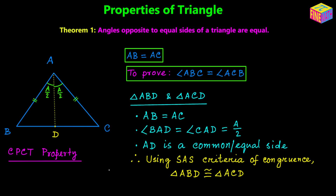Looking at these two congruent triangles, one pair of corresponding parts is the two corresponding angles. For triangle ABD, the angle at B is opposite to side AD, and for triangle ACD, the angle at C is opposite to side AD. So these are corresponding angles, and by CPCT they are equal. Renaming slightly: angle ABD is angle ABC, and angle ACD is angle ACB — so we have proved that angle ABC equals angle ACB, which is exactly what we needed to prove.